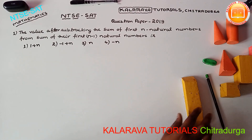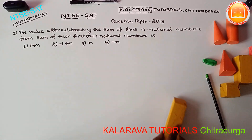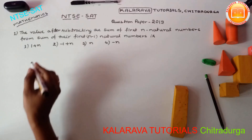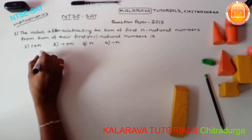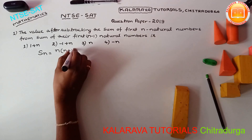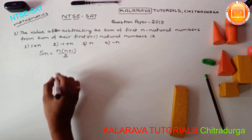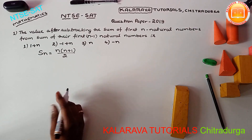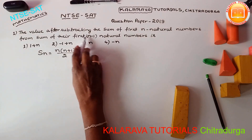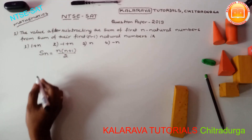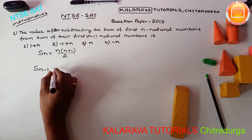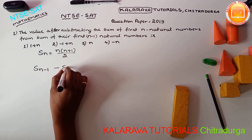We will solve this problem using the sum of N natural numbers. The formula for the sum of N natural numbers is Sn = N(N+1)/2. We need to subtract the sum of N natural numbers from the sum of N minus 1 natural numbers, so we take S(N-1) minus Sn.